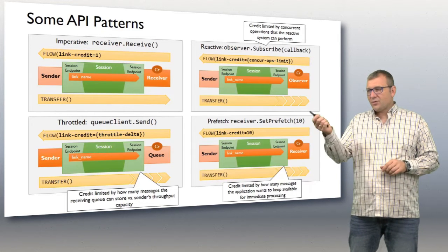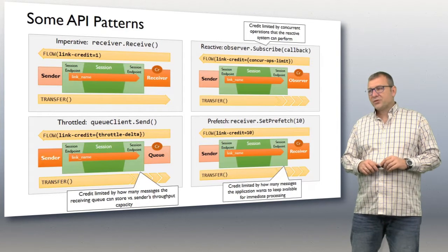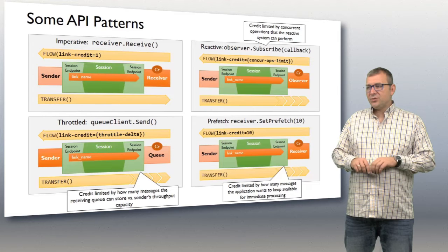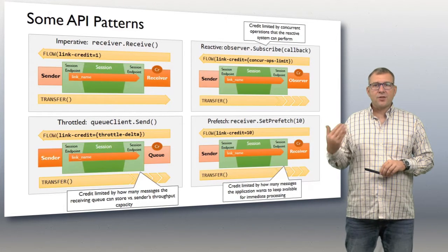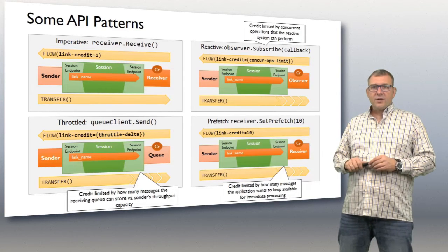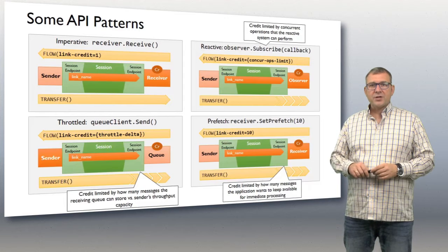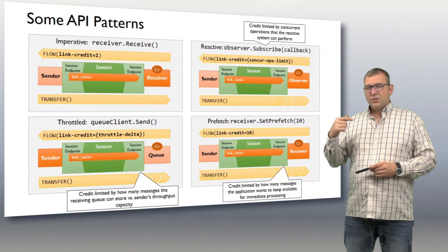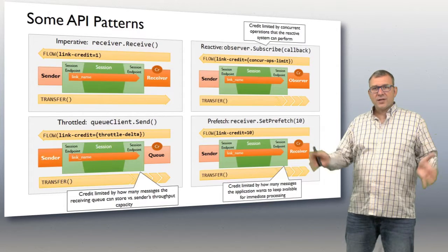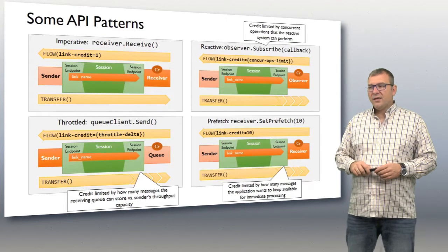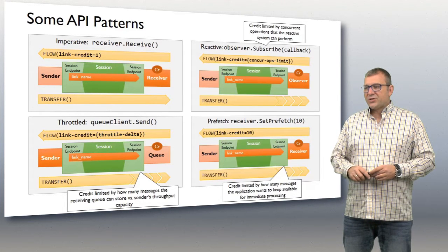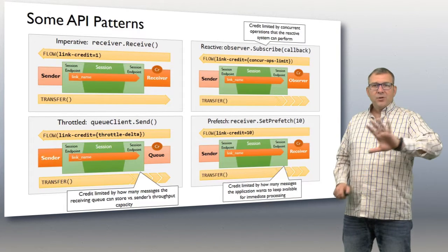The reactive model (upper right): an observer subscribes and provides a callback. In that case you don't do individual receives — instead you have a concurrent operations limit defining how many messages your thread pool can handle at the same time, and you park the appropriate link credit on the other side. As concurrent operations complete, you keep booking more link credit, always keeping enough messages flowing so all your concurrent processing loops stay busy.